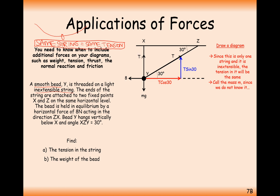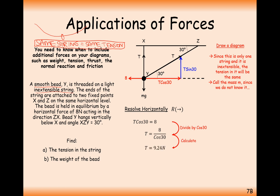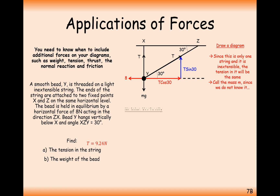We have two unknowns: T and M, so simultaneous equations may be needed. Resolving horizontally, leftward forces equal rightward forces: T cos 30 equals 8. Dividing by cos 30, we get T equal to 9.24 newtons. Since M is not involved in the horizontal component, we can work out T straight away — T is 9.24 newtons.